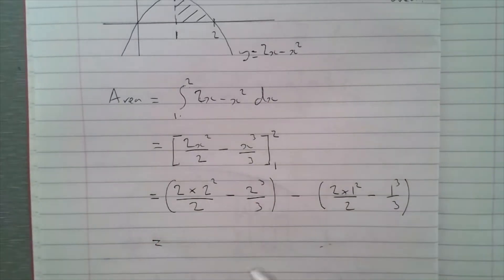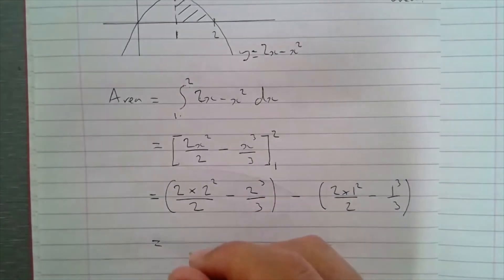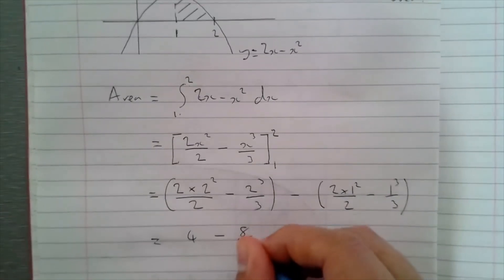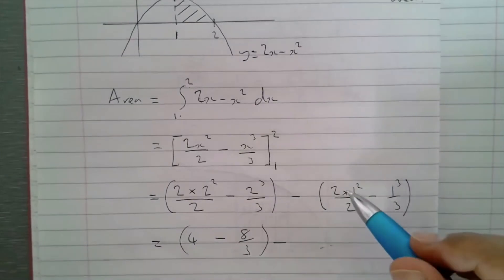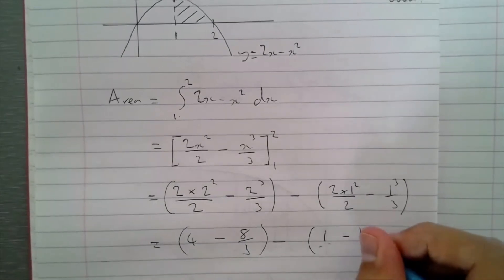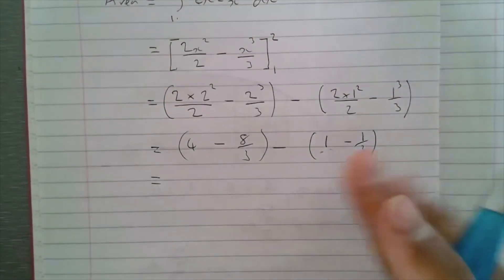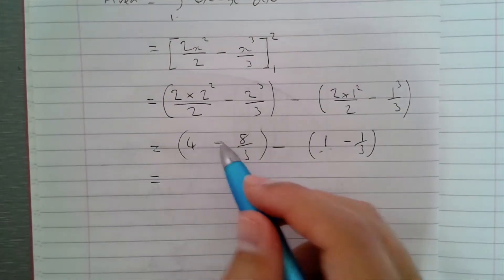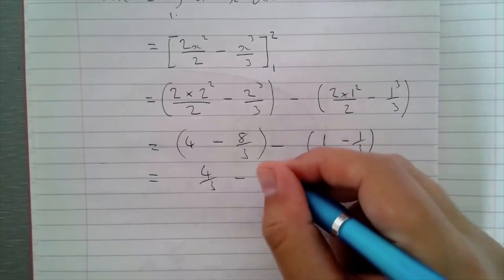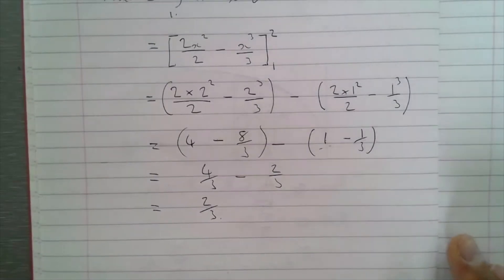Then I can just evaluate these and come up with an answer. 2 squared is 4 times 2, that's 8 over 3, minus 1 minus 1 third. If I've got 4 minus 8 thirds, well that's 12 thirds, so 12 minus 8 is 4 thirds. Take away 1 minus 1 third is 2 thirds, which leaves me just 2 thirds. So the area underneath the curve between 1 and 2 is 2 thirds.